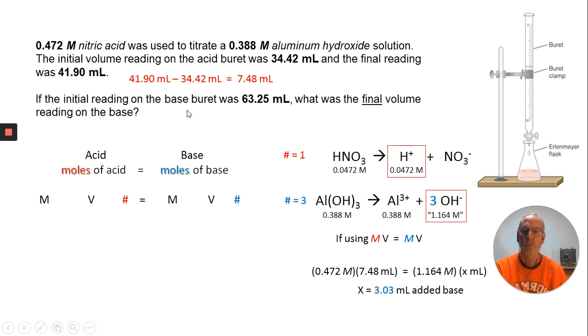You have to understand the initial reading on the burette was 63.25. When you add stuff, the number is going to get bigger on the burette. Some of you took 63.25 minus 3.03, some just chose 3.03 for an answer. But what you need to do is take the 63.25 and add the 3.03 mL.